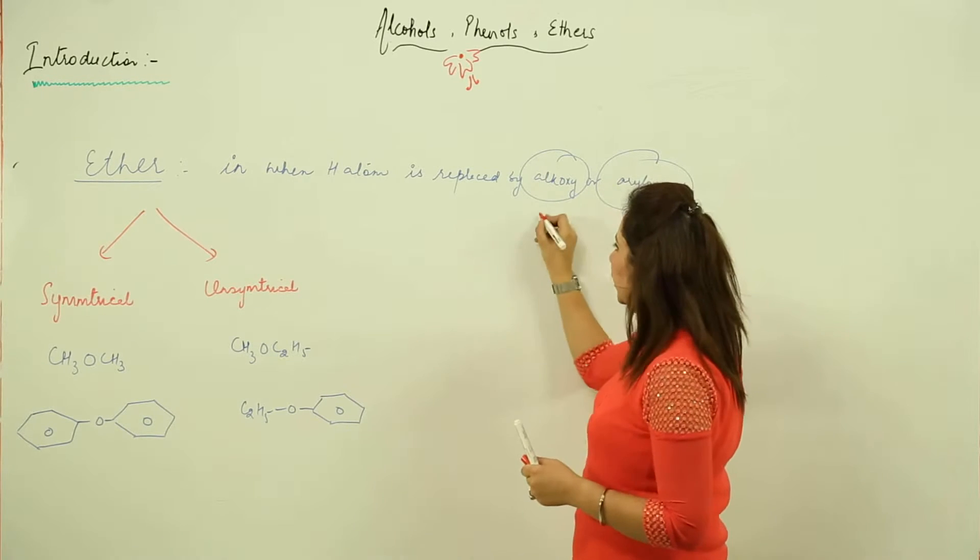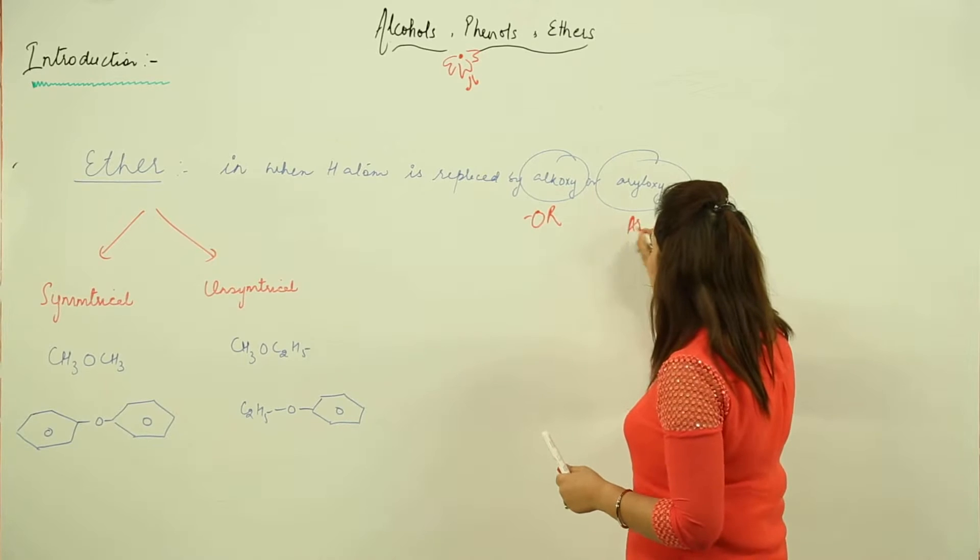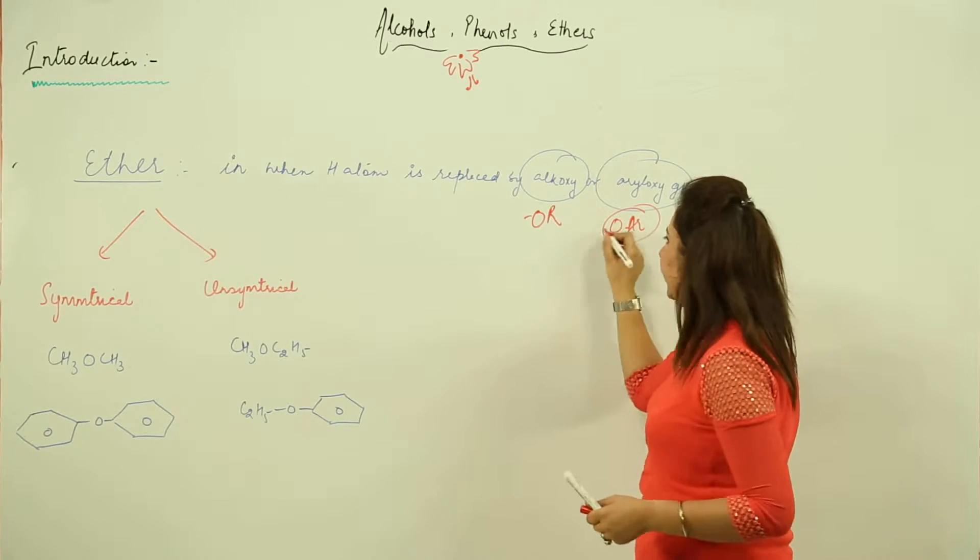What is the alkoxy group? As you already know, OR, and this is the O with an aromatic ring.